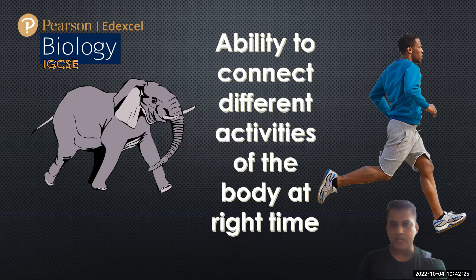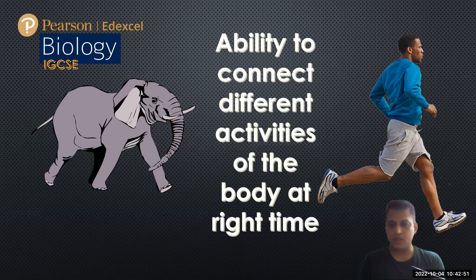So we can understand: coordination is the ability to connect different activities of the body at the right time. The right time here is to escape from the elephant — the man has to run faster. If the respiratory rate does not increase and the heart rate does not increase, there is not enough oxygen and not enough glucose, so the man cannot run faster. That is not coordination, because the different activities of the body are not connected at the right time.